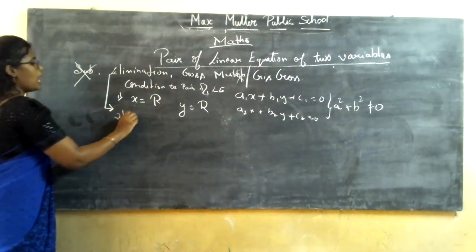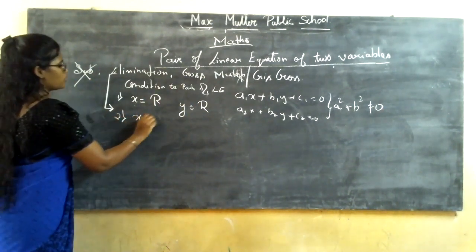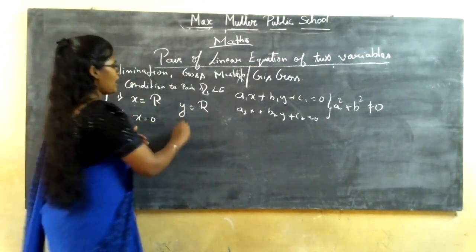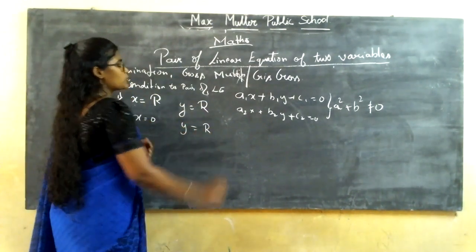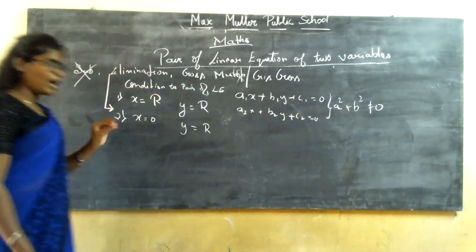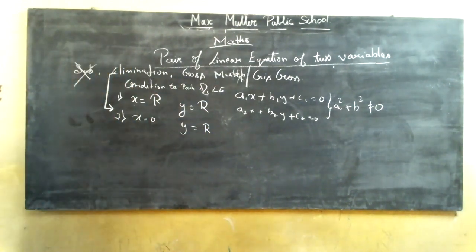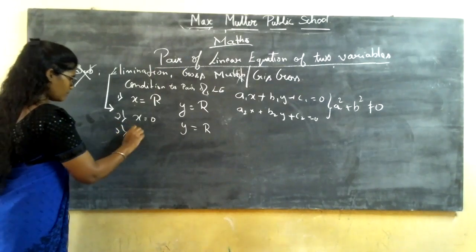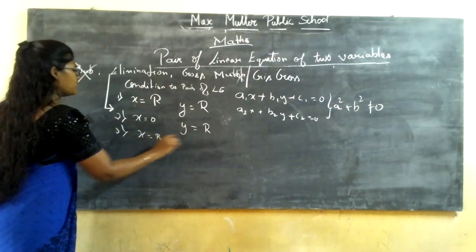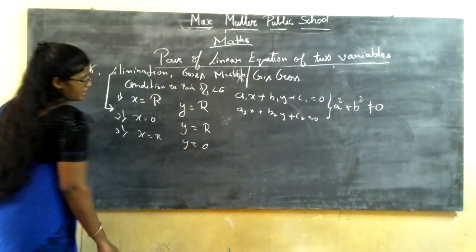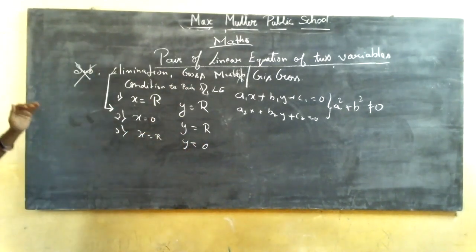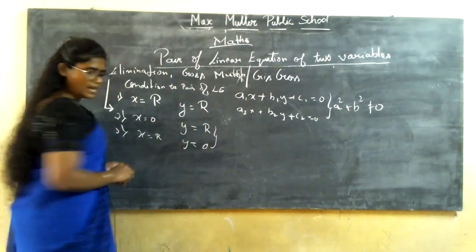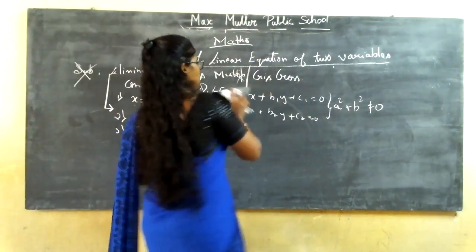There are further conditions: x can be 0 when y has a real number value. Alternatively, if x is a real number, then y can also be 0. I will give you an example regarding these conditions.